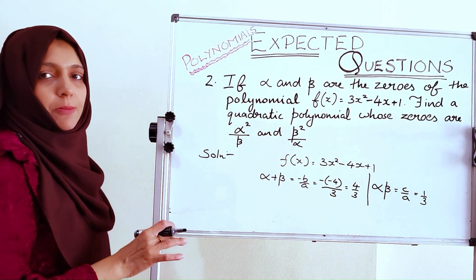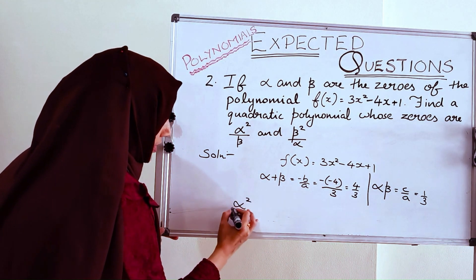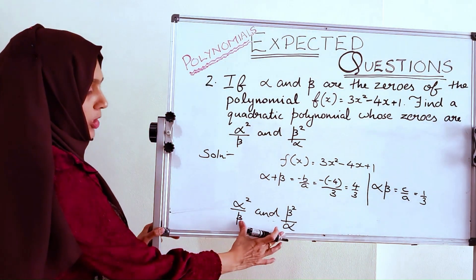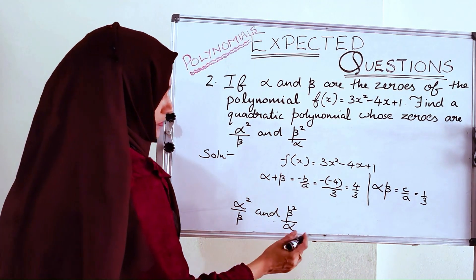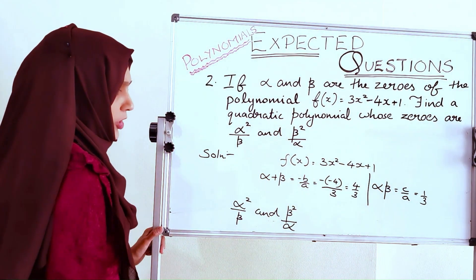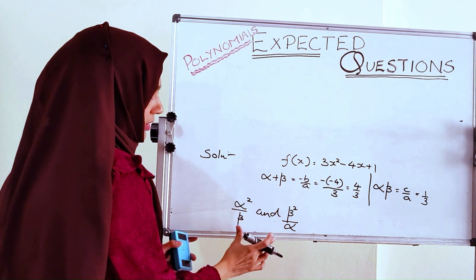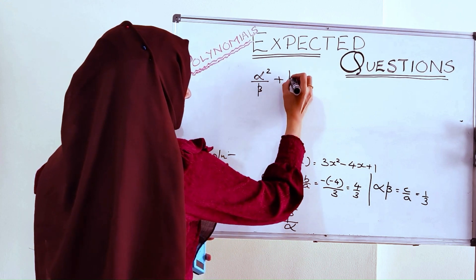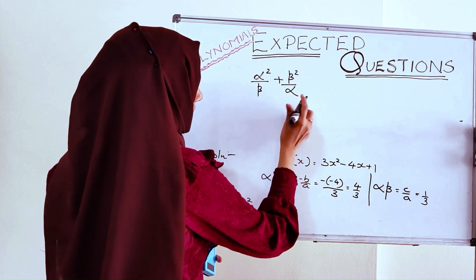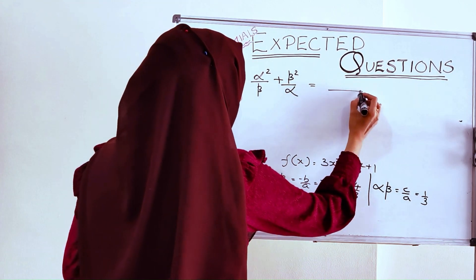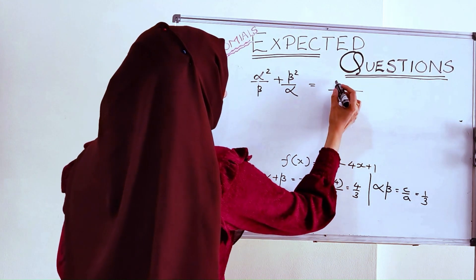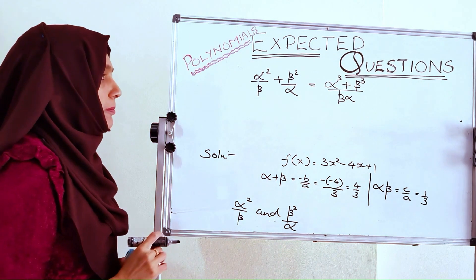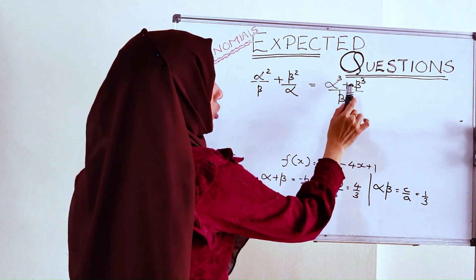Next, we have to find a new quadratic polynomial whose zeros are α²/β and β²/α. Let us find the sum and product of these new zeros. The sum of the new zeros is α²/β + β²/α. Taking the LCM as αβ and cross multiplying, we get (α³ + β³) / αβ. We will use the formula for α³ + β³.